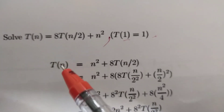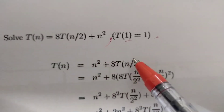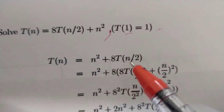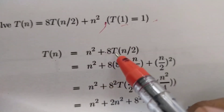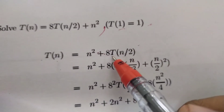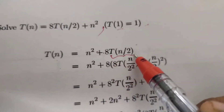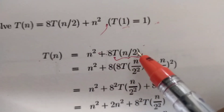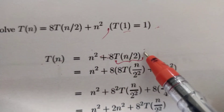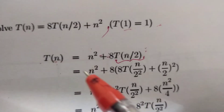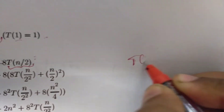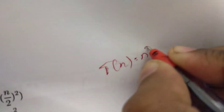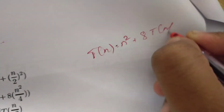We will start the iteration. T(n) = n² + aT(n/2). Now substitute T(n/2): T(n/2) = (n/2)² + aT(n/2 / 2). So T(n) = n² + a·T(n/2).